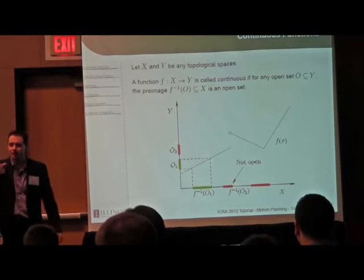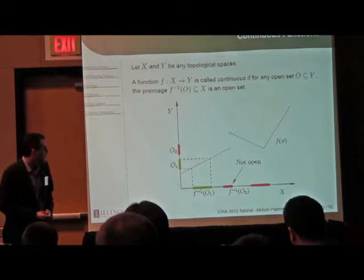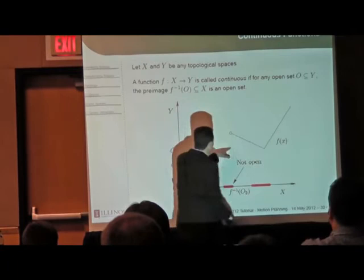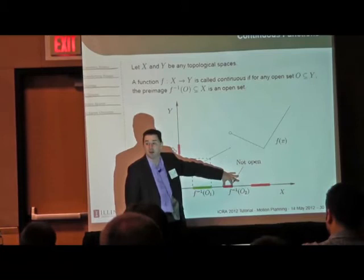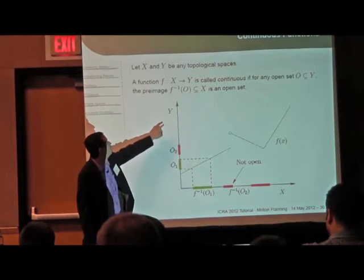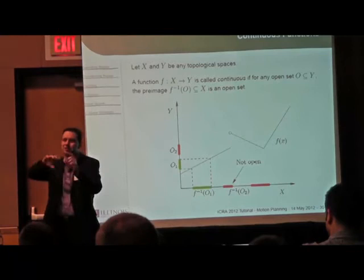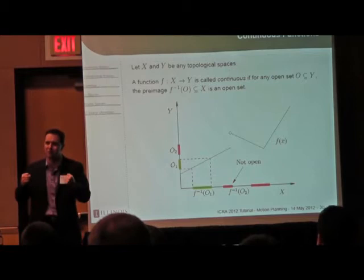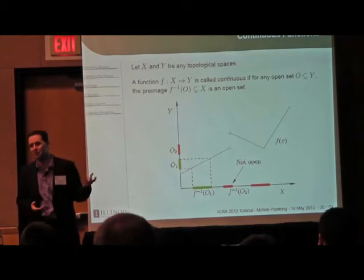A good question: if the open set in the range is positioned so that the preimage looks open, does that show continuity? No — this condition has to work for any open set you pick. You can take unions of intervals and all sorts of things; you get to play devil's advocate and pick the nastiest open set to try to show the function is discontinuous. The function has to survive the test of an infinite collection of open intervals to prove continuity.